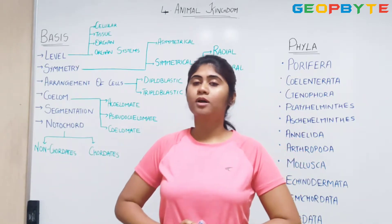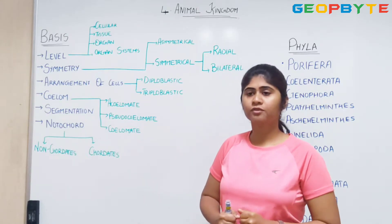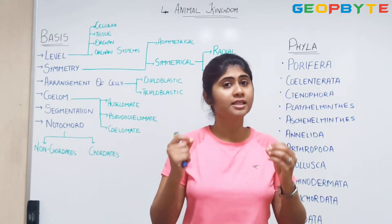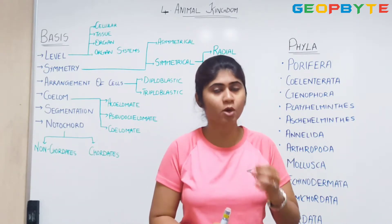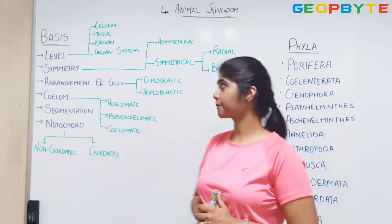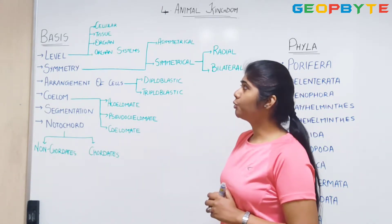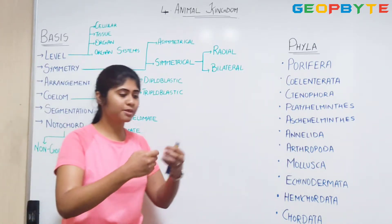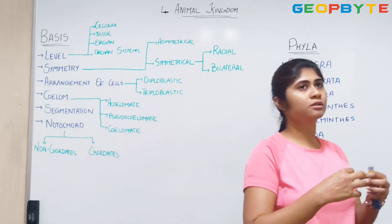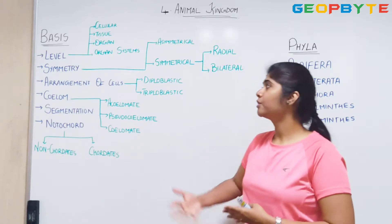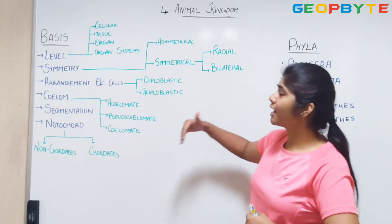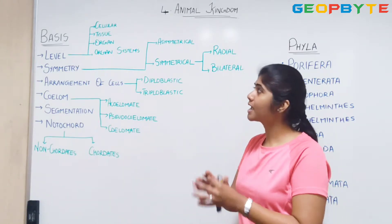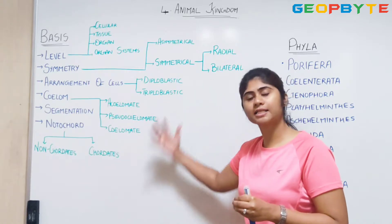Now, when classification is done, will you just take a few animals and say you are this class? No. There is a proper basis on which classification is being done. Like in case of plants, we have classified based on reproduction or based on external characters. In the same way, for animals also, we have taken few features which are common to certain organisms as the basis on which their classification will be done.